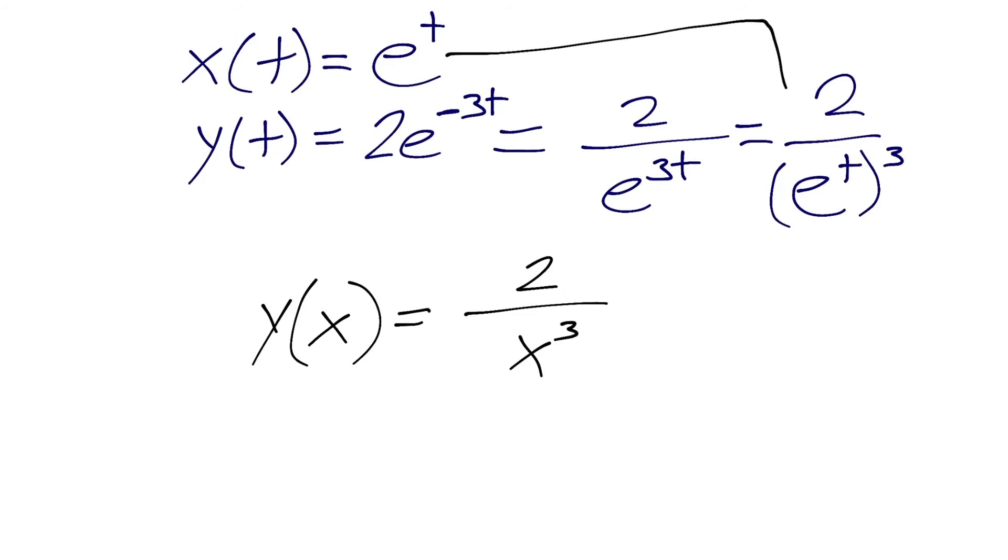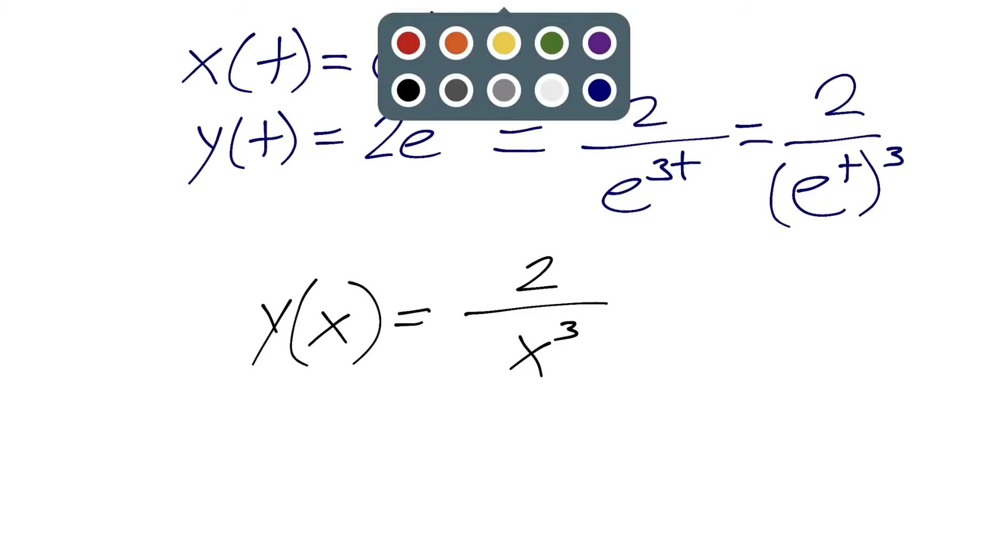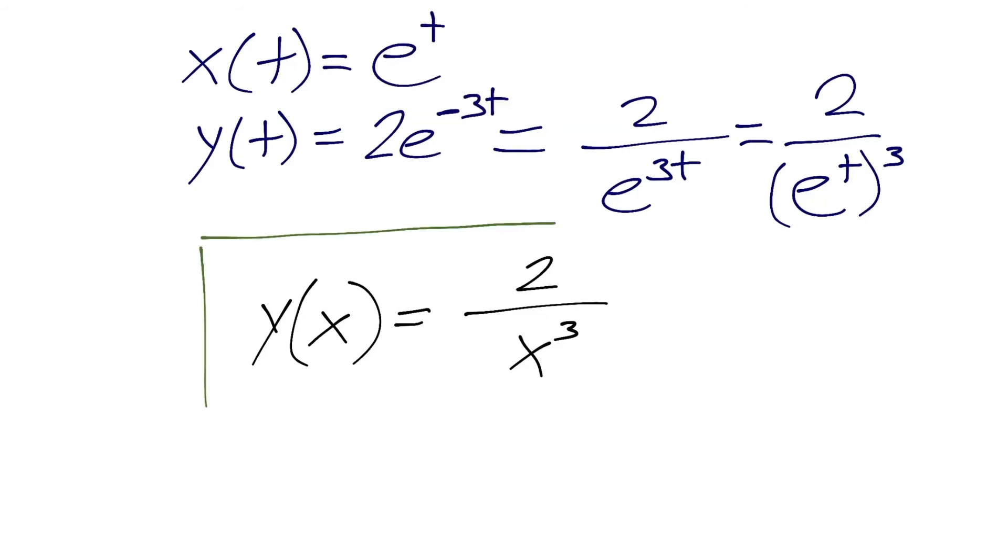Again, this equation is just substituting right in there. Here, x is equal to e to the t, so we can just plug it in, and we'll have x cubed. And there is our new equation, y in terms of x, with the parameter t eliminated.